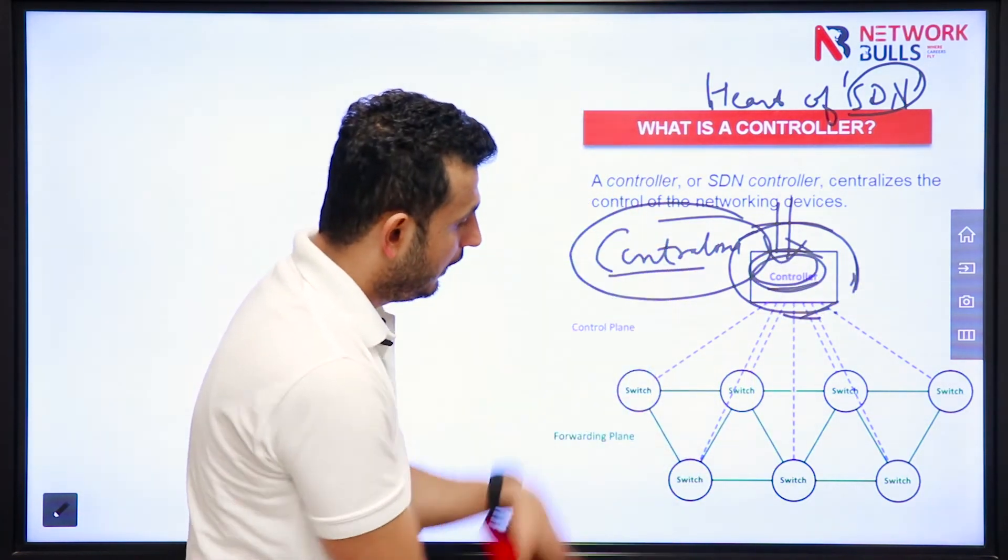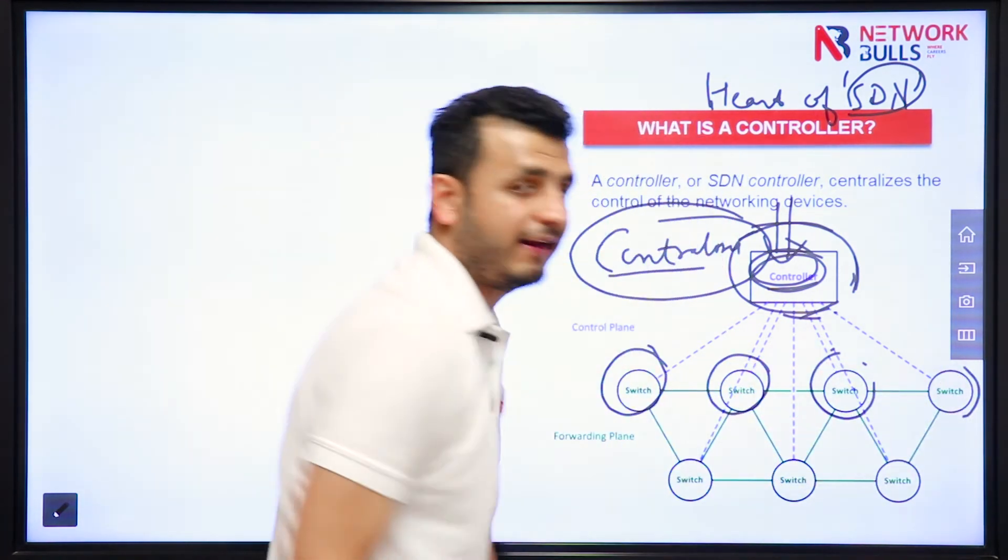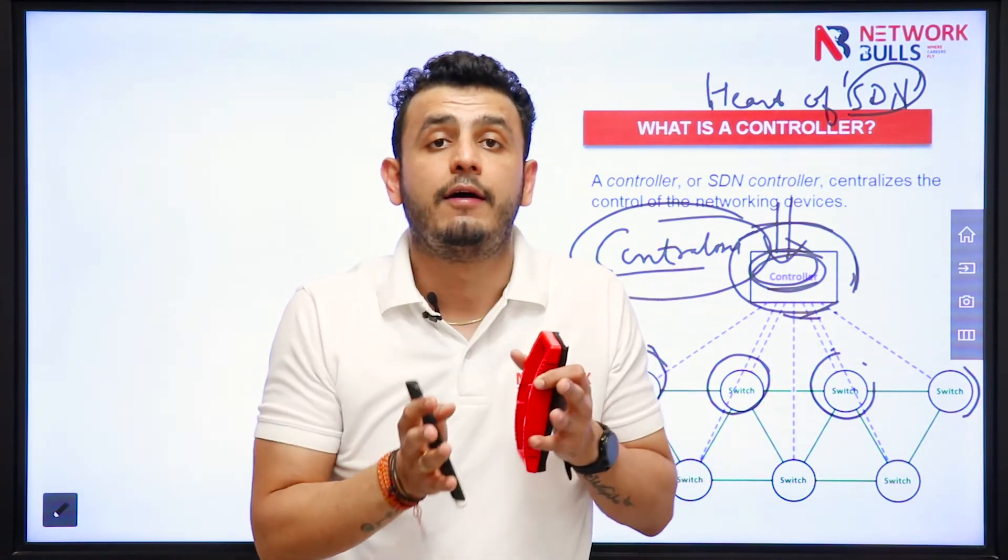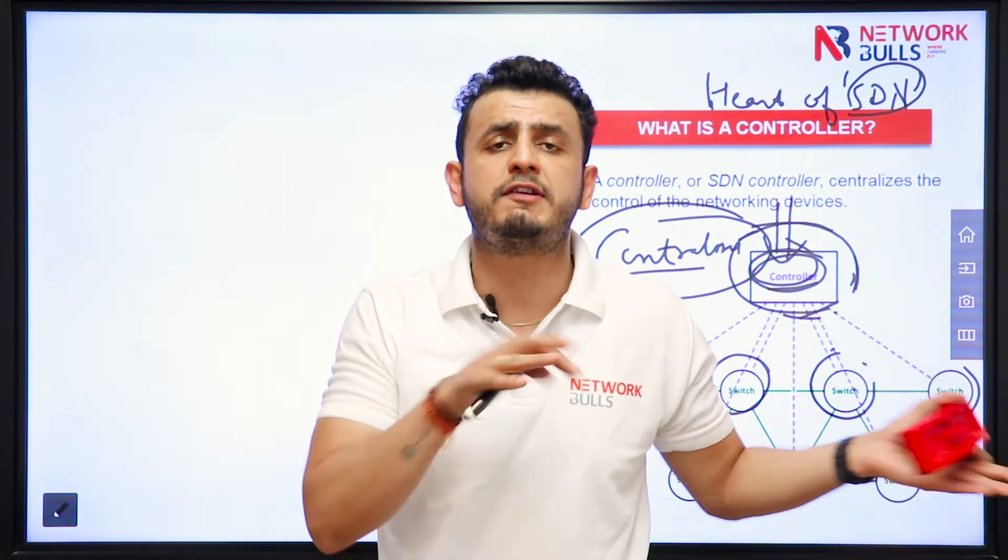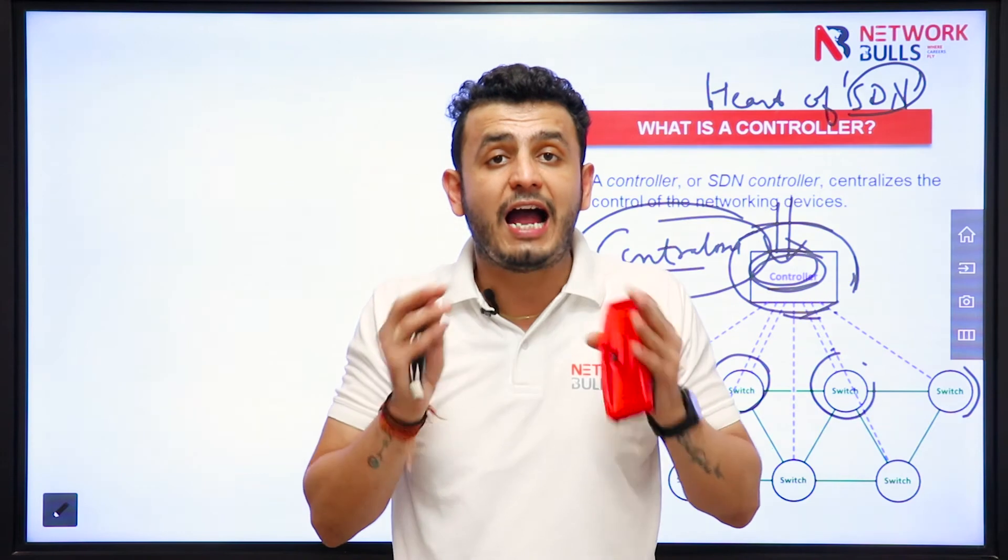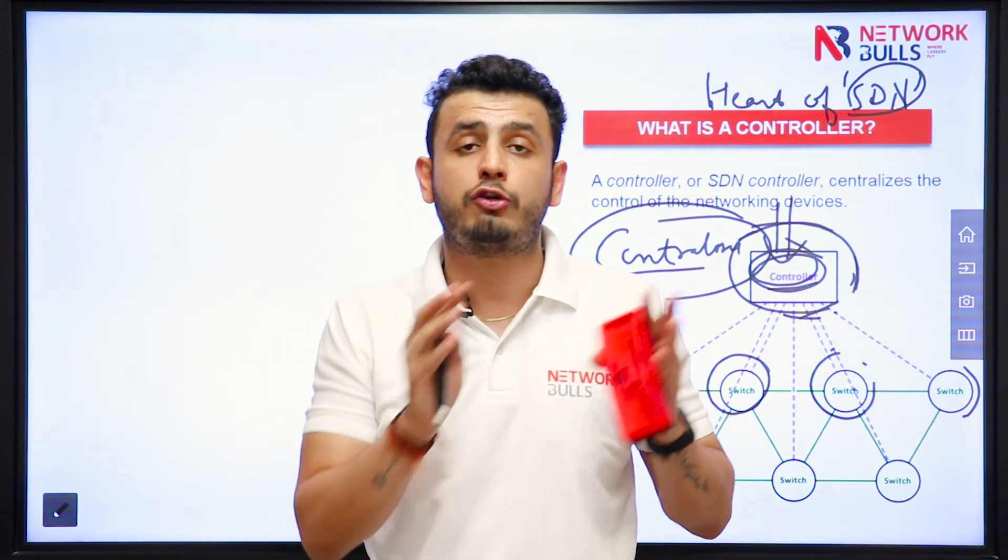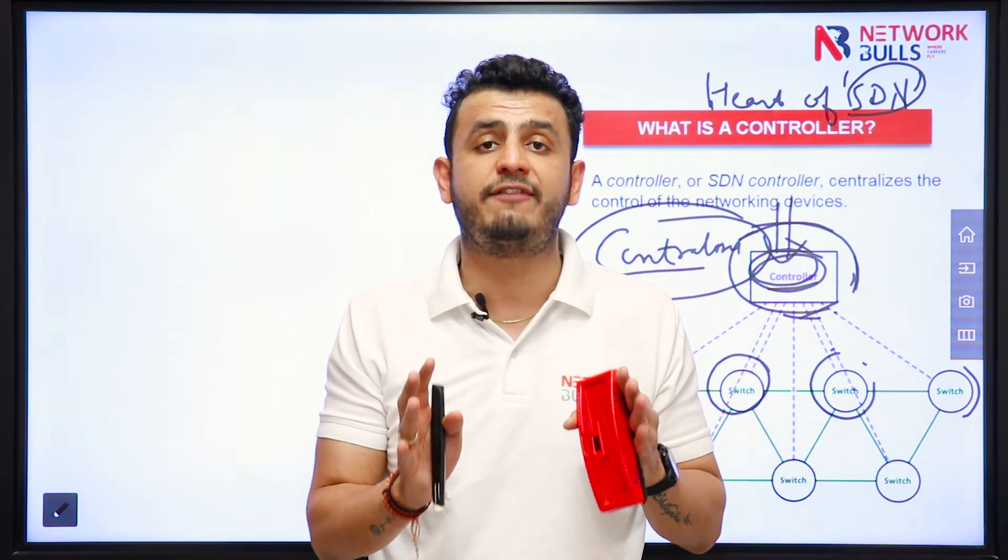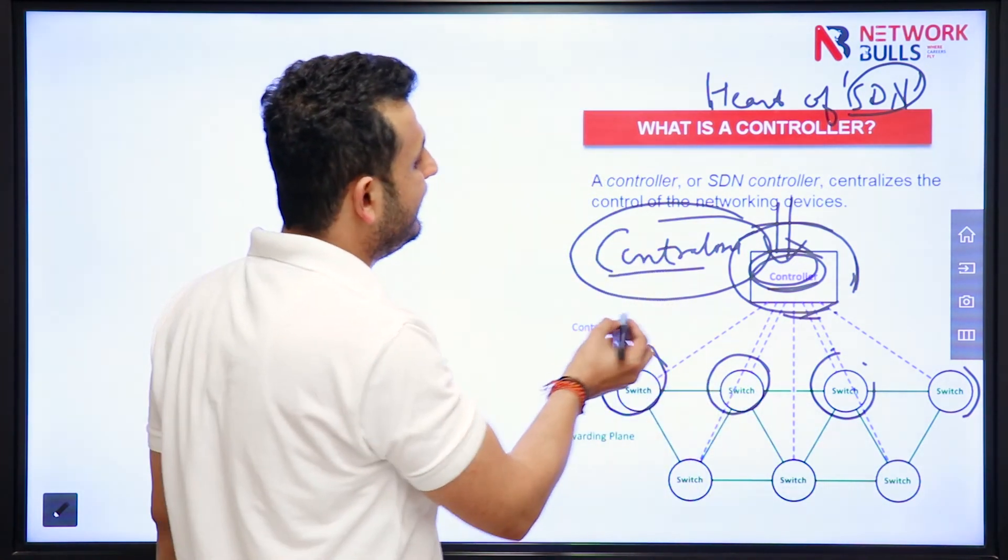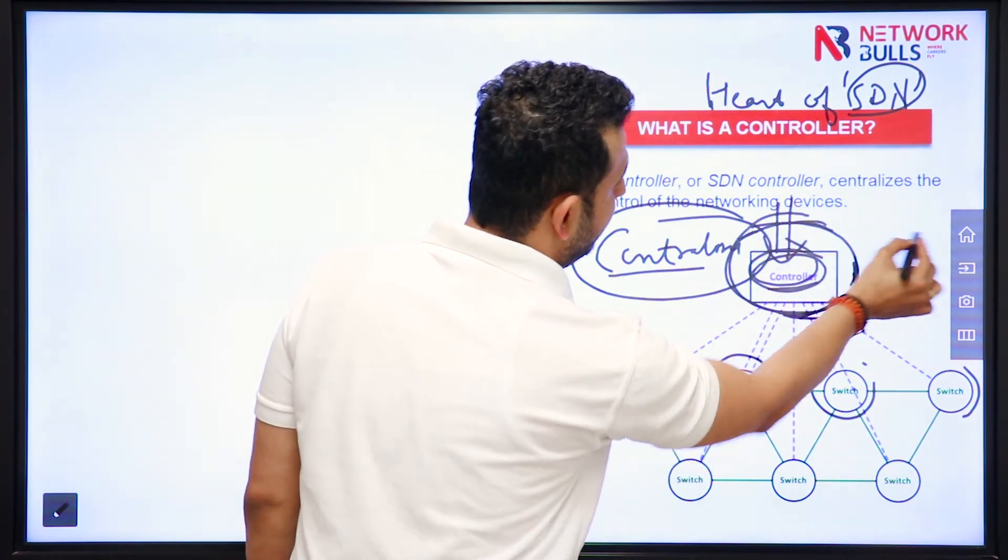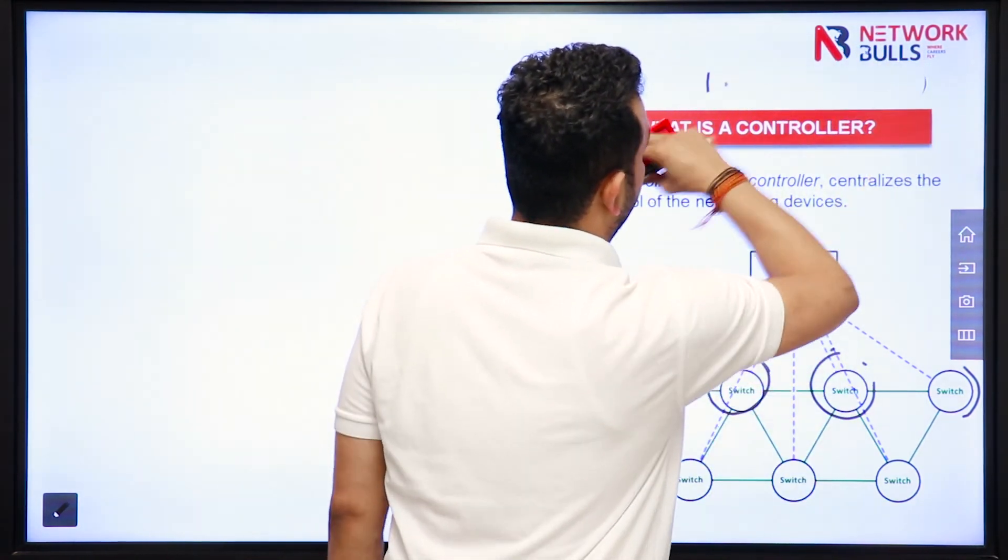From controller, I will be able to push everything on these devices. For example, these are switches, I will be telling them which ports will be in forwarding state, which port will be blocked, which path you have to use for which particular type of traffic. If they are routers, I will be forwarding routing table to the router so that they can exchange traffic. Routers or switches will no more have any control plane functions in them. So as per SDN or according to SDN, what we are doing? We are centralizing control plane into a device called controller.